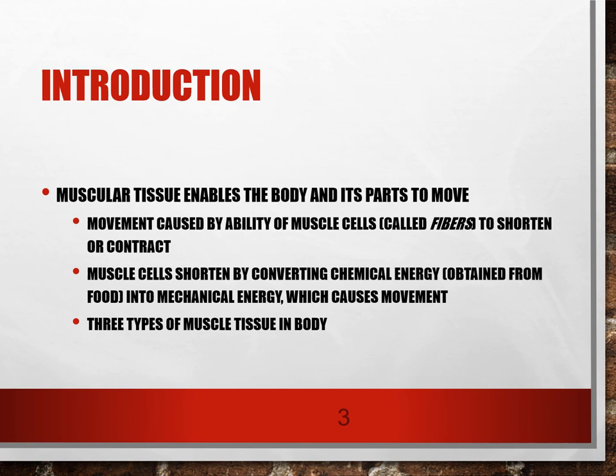Muscles enable us to move. Chemical energy from nutrients is transferred to protein filaments in the muscles, and this is converted to mechanical energy, which causes the muscle to shorten or contract. In essence, our ability to survive often depends on our ability to adjust to changing conditions in our environment and to maintain homeostasis, and muscles help us to do that.